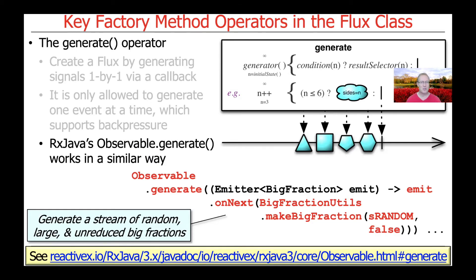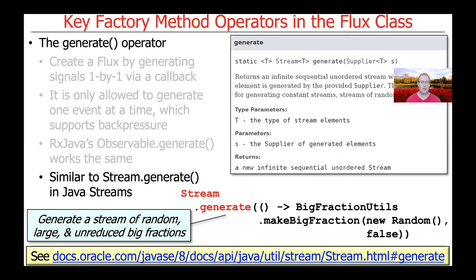You'll see a lot of those subtle differences between Project Reactor and RxJava with respect to methods like create and generate. There's also a Java Streams generate method as well, which can be used in a similar way. Here's an example of how you could use the Java Streams generate method to generate a stream of random, large, unreduced big fractions. Once again, very similar concepts, just slightly different ways of calling this, with slightly different types used in different contexts.